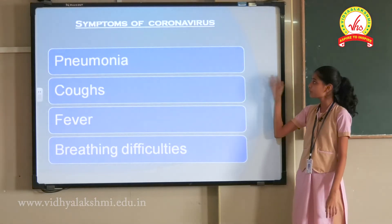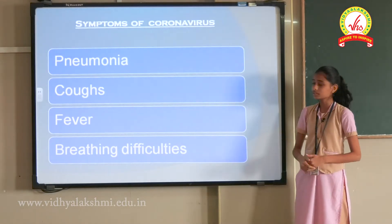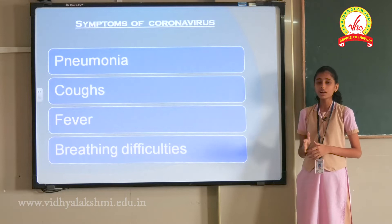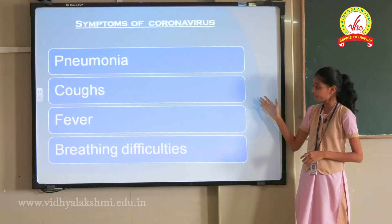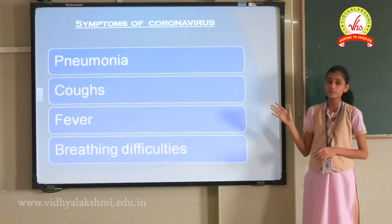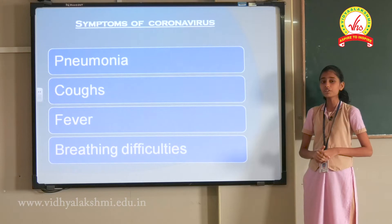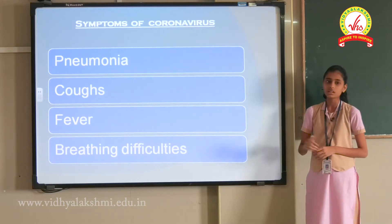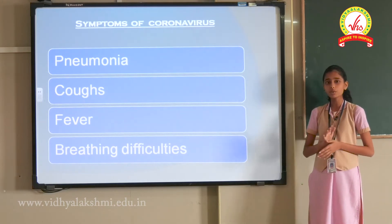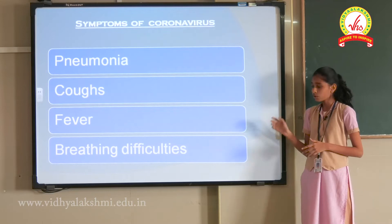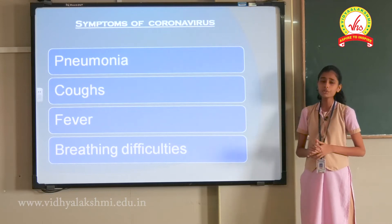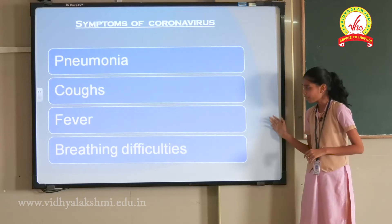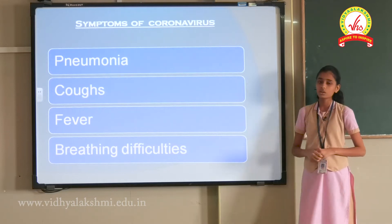Symptoms of coronavirus: Coronavirus can cause pneumonia. In the first stage, the person can have cough, fever and breathing difficulties. In some severe cases, the person can also get organ failure. Antibiotics are of no use, so it is important for a person to have a stronger immune system to fight against coronavirus.